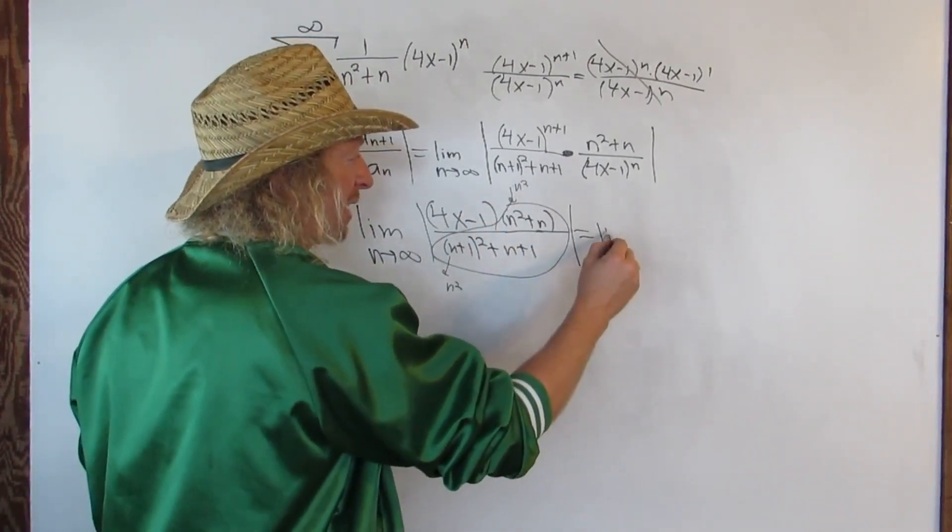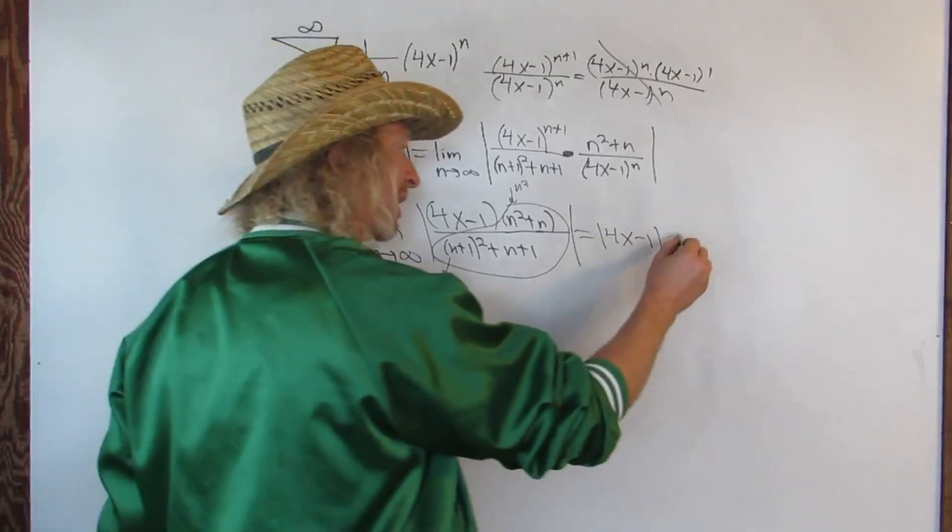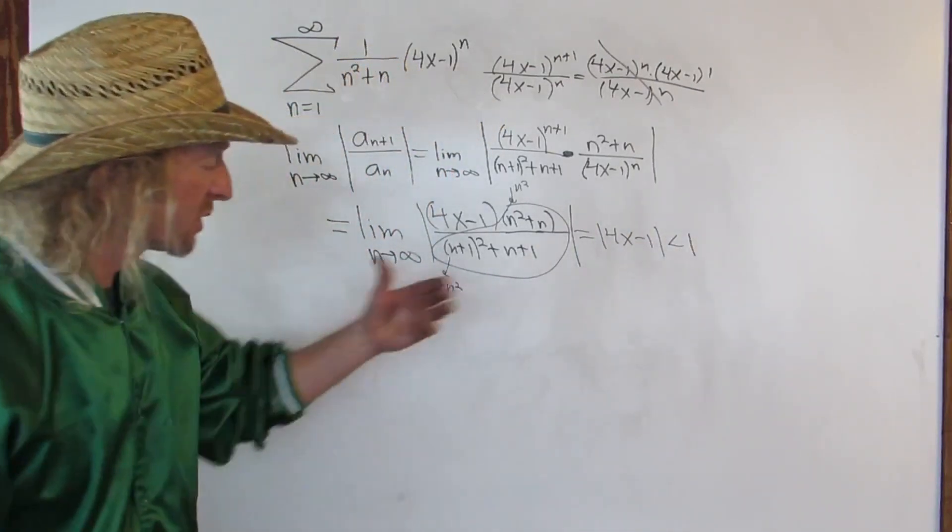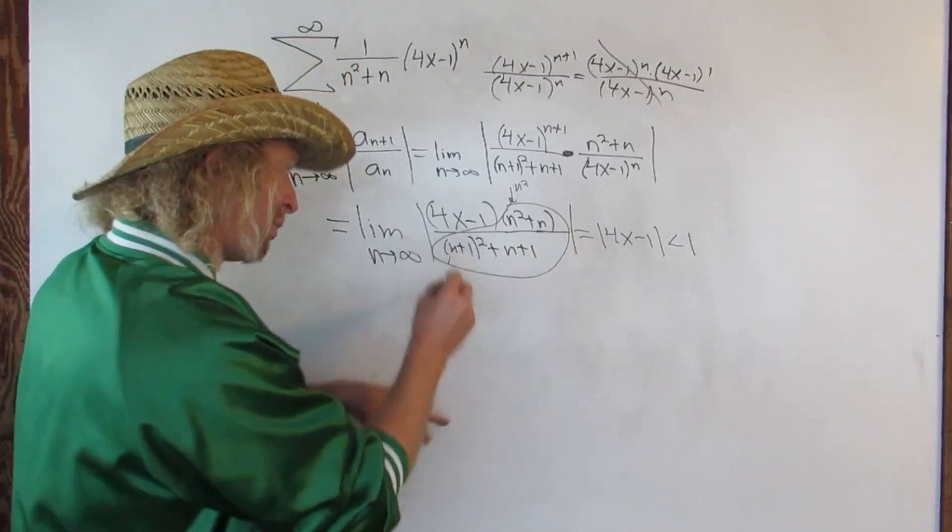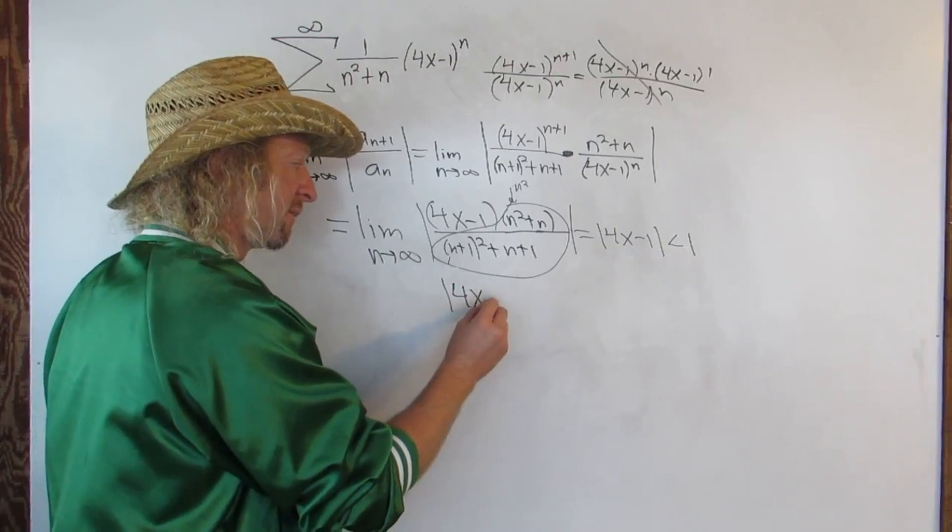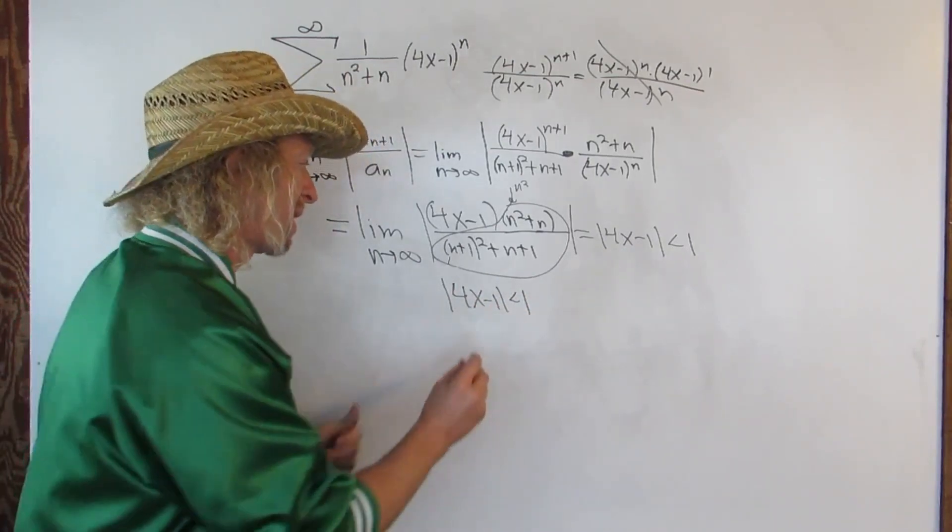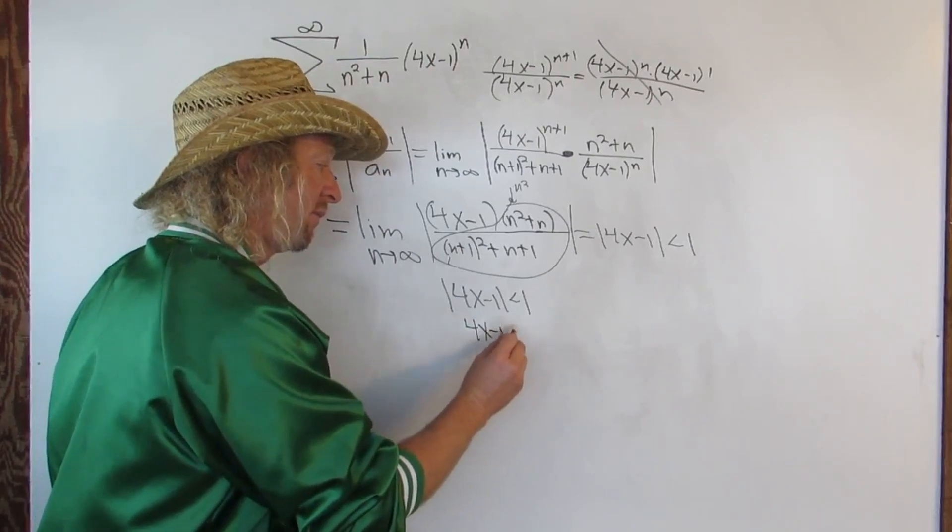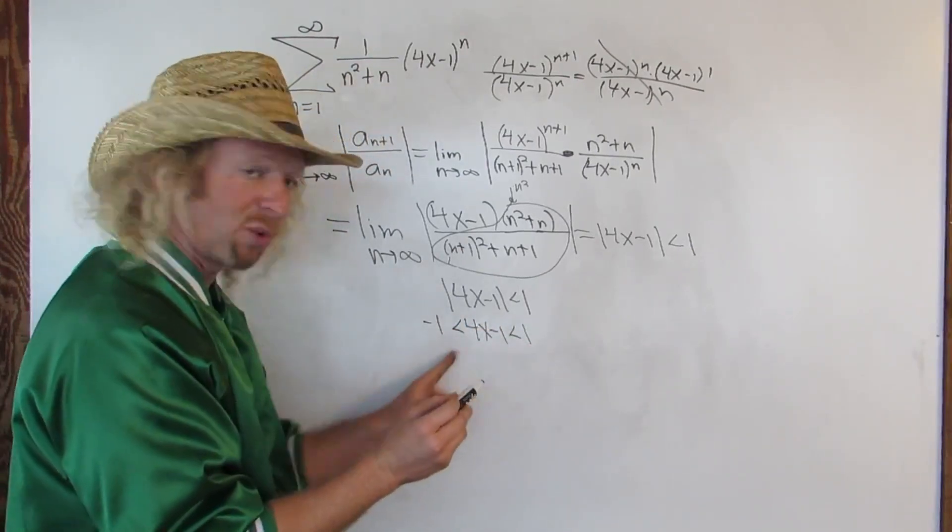So this is equal to the absolute value of 4x minus 1. And you want this to converge, so you set it less than 1. So now what you do is you solve this inequality. So when you solve this inequality, you have, if you write it again over here, 4x minus 1, less than 1. When you drop the absolute value, you have to put a plus and a minus. So 4x minus 1, greater than 1, less than 1, greater than negative 1.